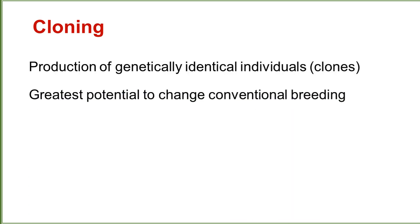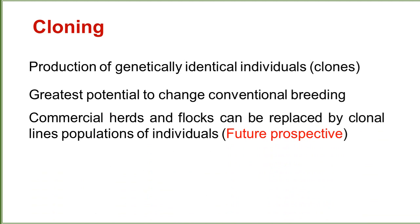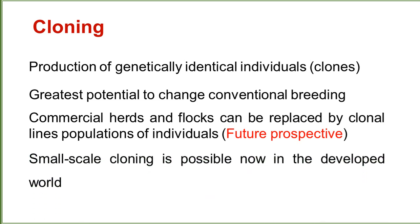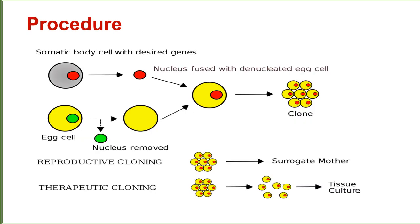The next technology is cloning, which is the production of genetically identical individuals. It has the greatest potential to change conventional breeding. Commercial herds and flocks can be replaced by clonal line populations of individuals. Small-scale cloning is possible now in the developed world. The procedure of cloning involves somatic cells and egg cells fusing together to form a clone.